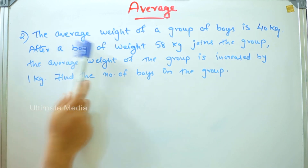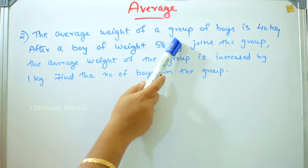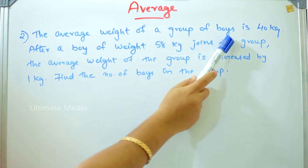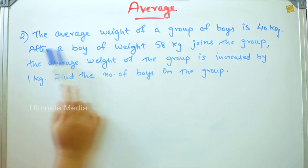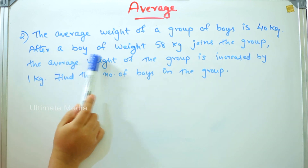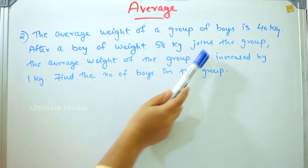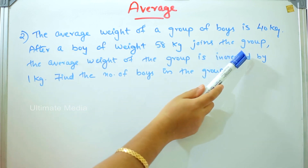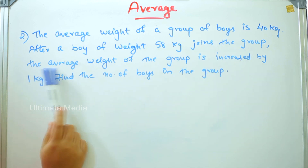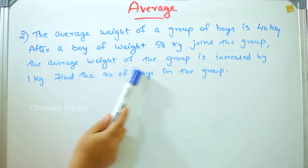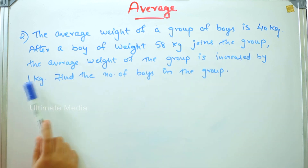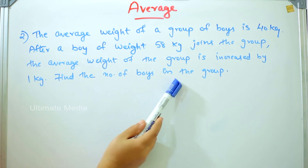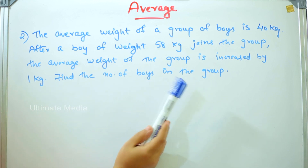The average weight of a group of boys is 40 kg. After a boy of weight 58 kg joins the group, the average weight of the group is increased by 1 kg. Find the number of boys in the group.